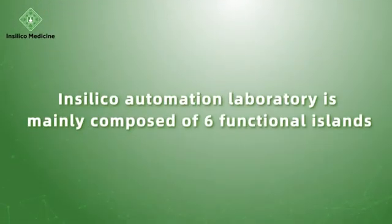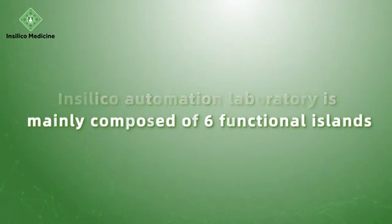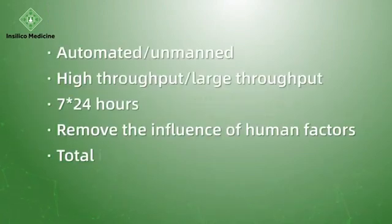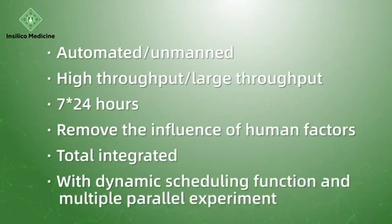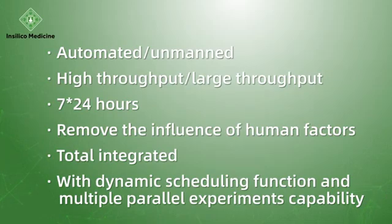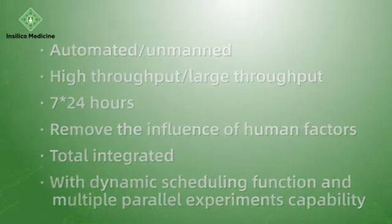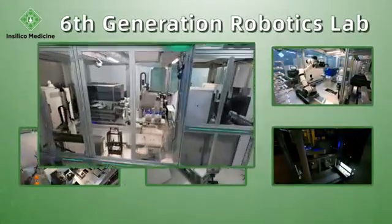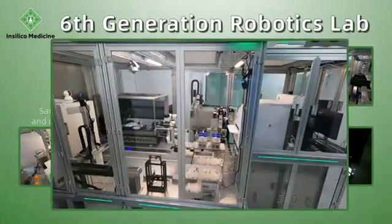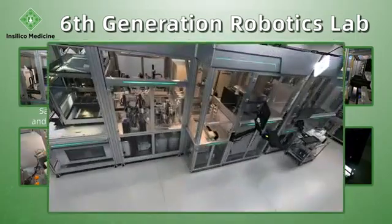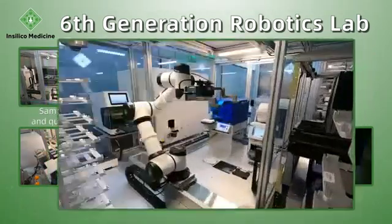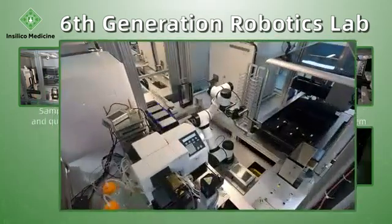In the field of drug discovery, target ID is a very critical step. To solve this problem, Insilico has introduced the automated robotics lab that uses advanced automation technology and machine learning algorithms to quickly filter and analyze large amounts of data and find promising targets.